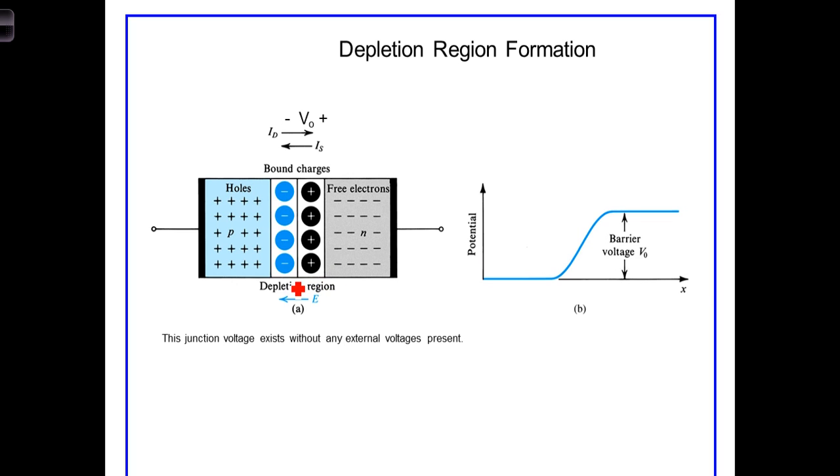These diffusing electrons then fill in the holes and covalent bonds on the P-side and add a net negative charge on the P-side. The net change in charge is as though both an electron moved to the left and a hole moved to the right. To account for this, we talk about and will also account for both electron current and hole current.